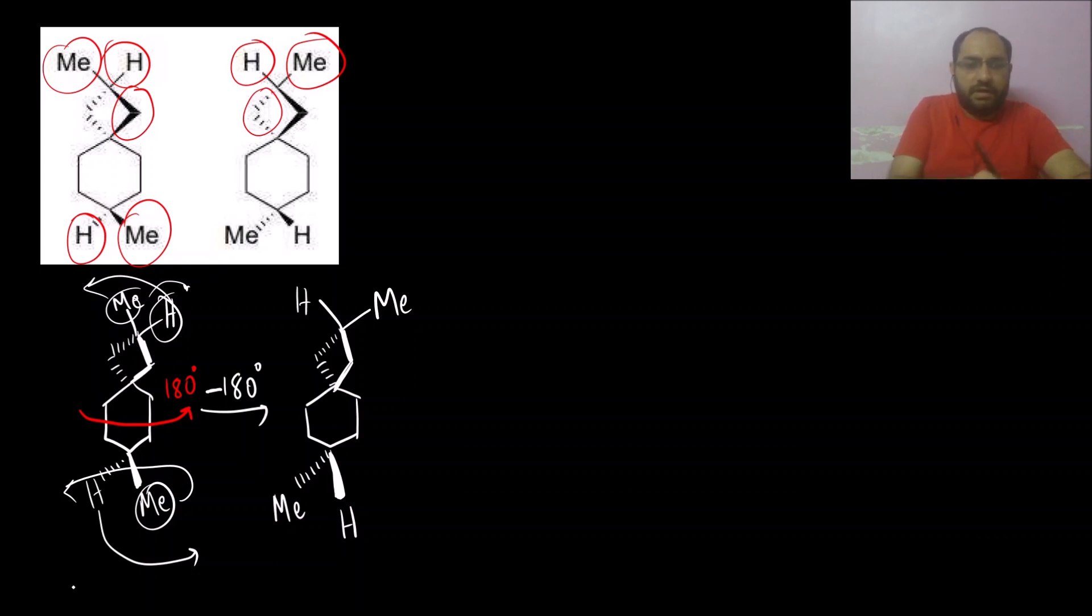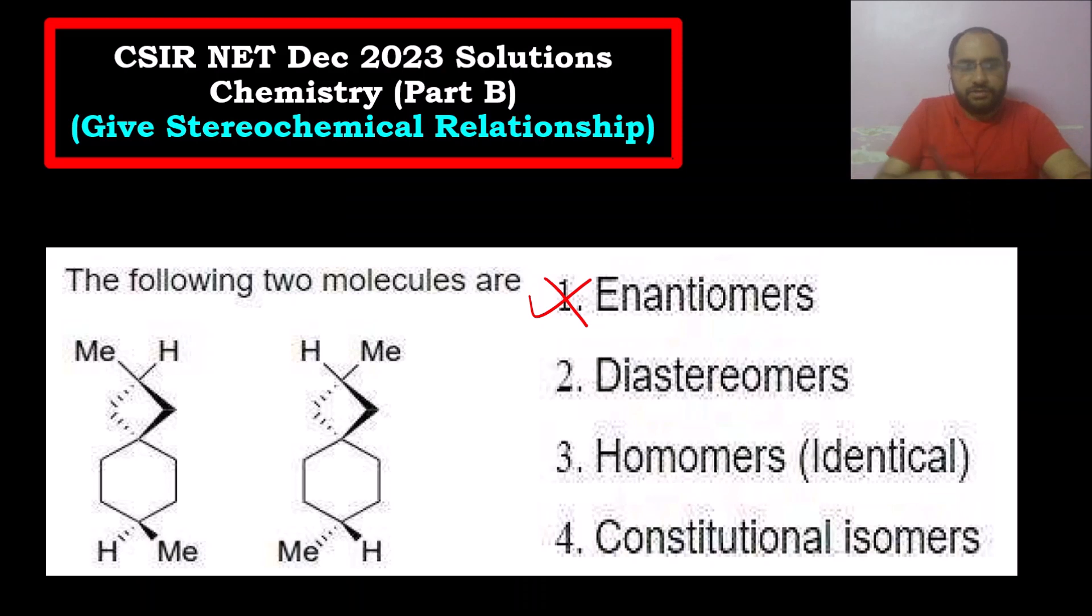We are getting the same molecule. So what would be the correct answer? They are homomers, or we can say they are identical molecules, not enantiomers. The correct answer for this question will be option three.